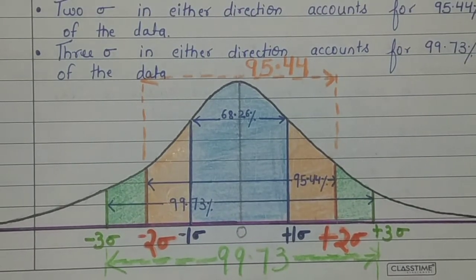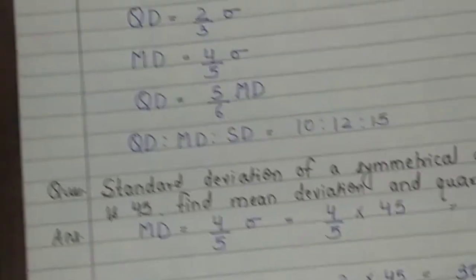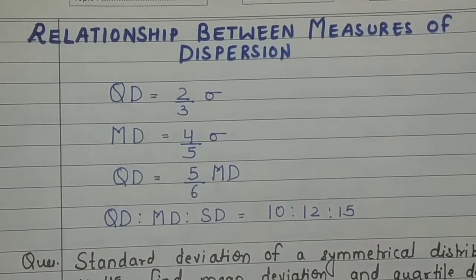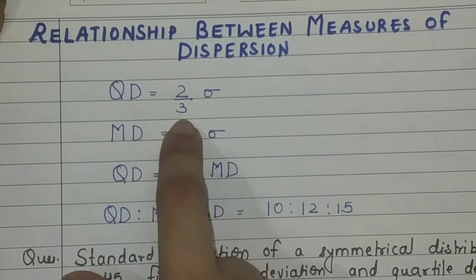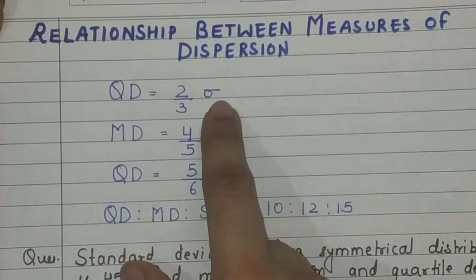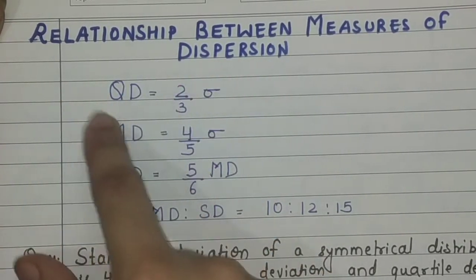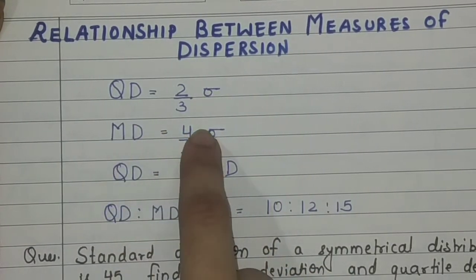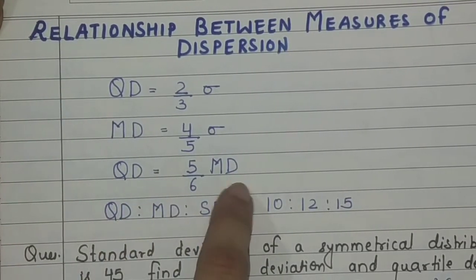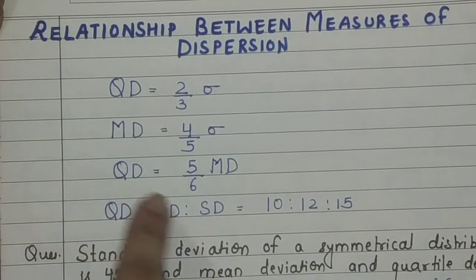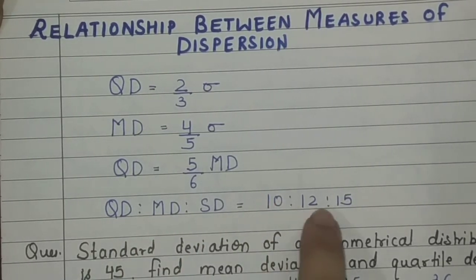Now let's talk about the relationship between various measures of dispersion. Quartile deviation is equal to two-thirds of standard deviation. Mean deviation is equal to four-fifths of standard deviation. And quartile deviation is five-sixths of mean deviation. Solving all of these, the ratio between quartile deviation : mean deviation : standard deviation is equal to 10 : 12 : 15.